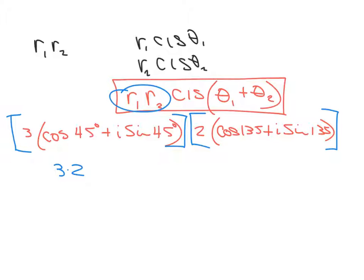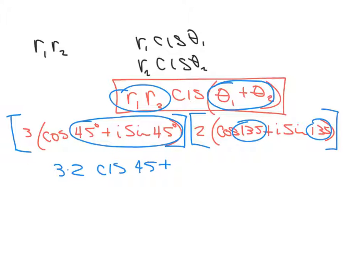Then what we do is we add the arguments, angle 1 and angle 2. Here's angle 1, 45, and here's angle 2, 135. So we're going to write those as cis 45 plus 135. We're just going to show that we're adding those.